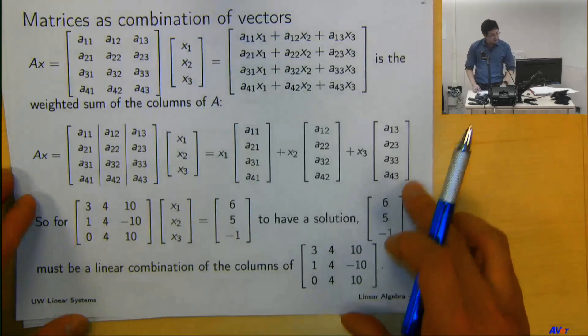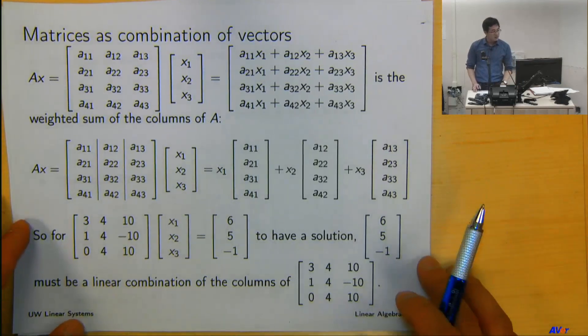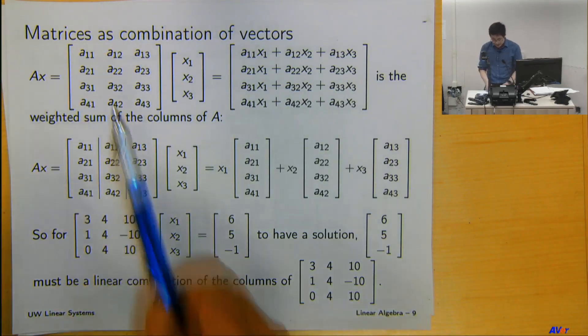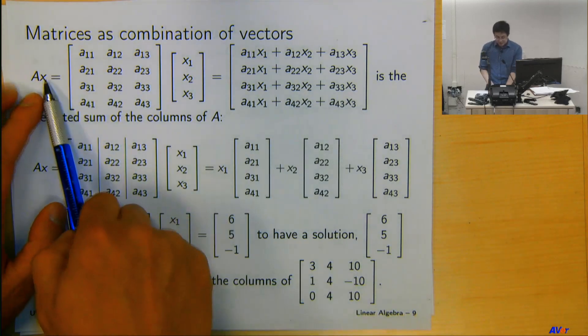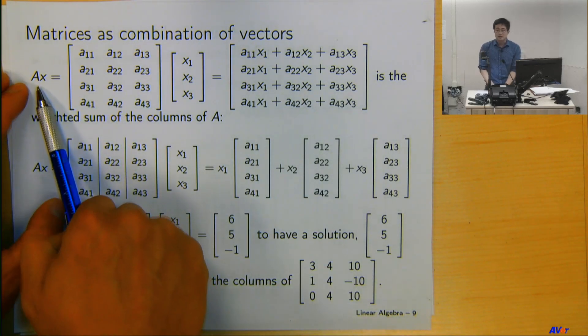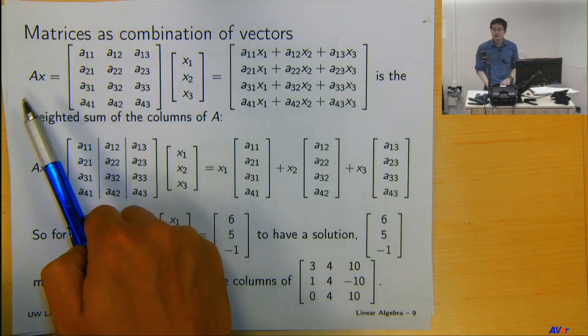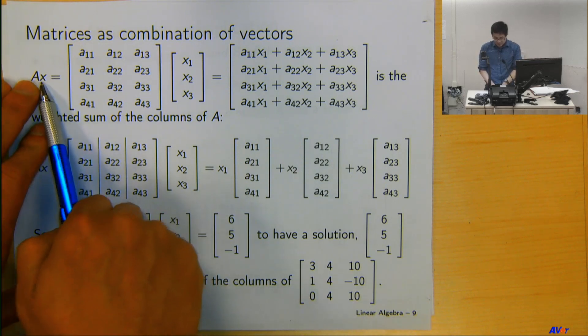It is very useful for us to think about matrices as a combination of vectors. If you talk about matrix multiplication A times x, which is what you see on the whiteboard on the left hand side, we're going to do this all the time.